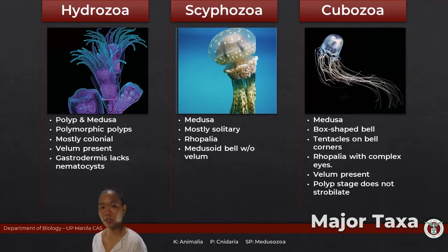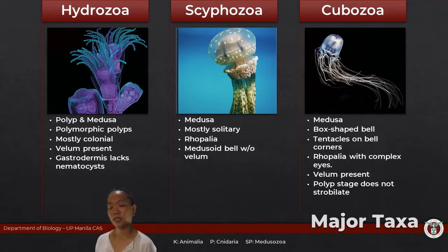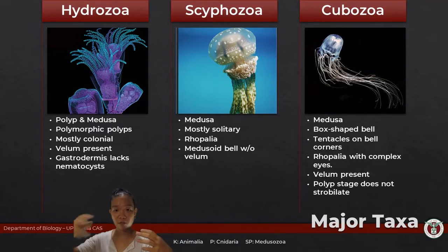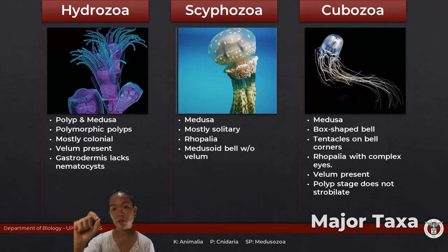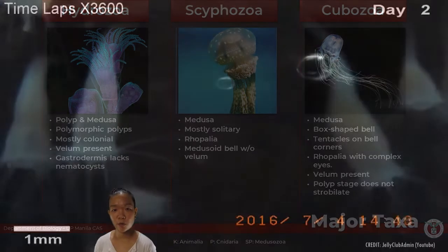Strobilation is the reproductive process in scyphozoans. The male and female medusae release sperm and egg that unite to form a planula larva, which settles and becomes a polyp. That polyp then develops layers upon layers — like stacks of pancakes — which is strobilation. Each layer then separates into an individual ephyra.